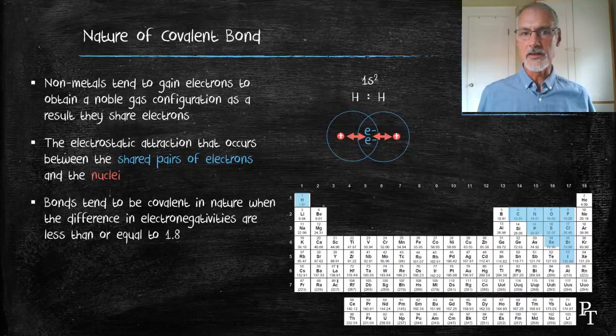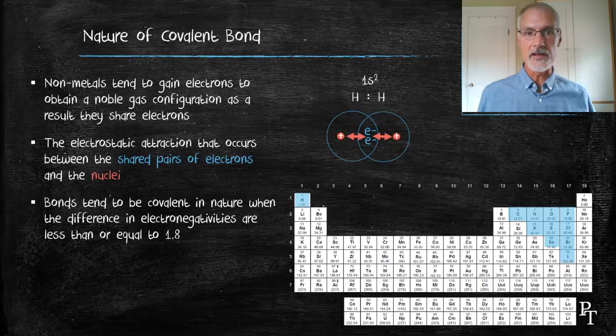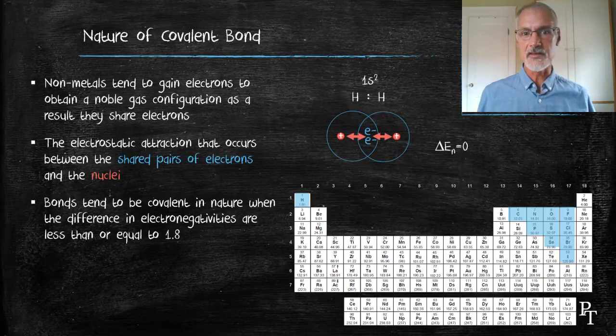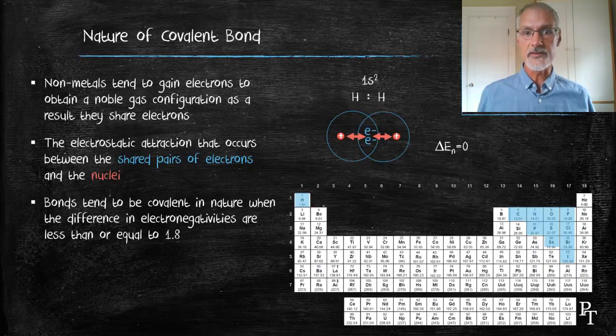By and large, covalent bonds involve elements whose difference in electronegativity is less than or equal to 1.8. So in the case of my first example, hydrogen, the difference in electronegativity of these two is zero because they're the same element.